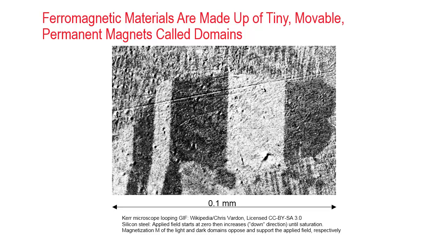In this case this is the first frame of a looping video. The light colored areas are domains that are magnetized in the up direction and the dark regions are magnetized in the down direction.